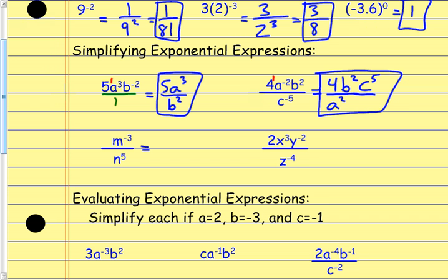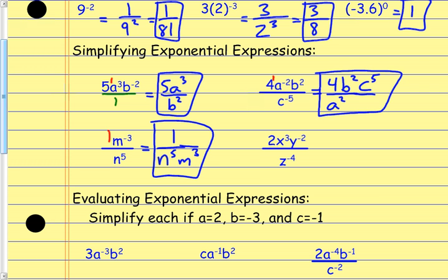For the next one, the n to the fifth has a positive exponent so it stays exactly where it is. The m to the negative third gets sent to the denominator and becomes m to the positive third. But now the thing left in my numerator — think about what the coefficient would be. I can't see it, but I know it's there: it's a 1. So I end up with 1 over n to the fifth times m to the third.